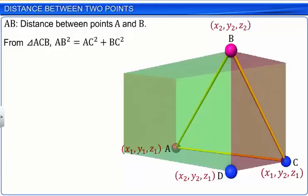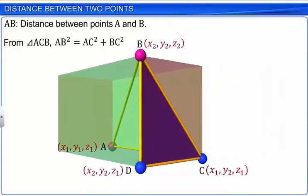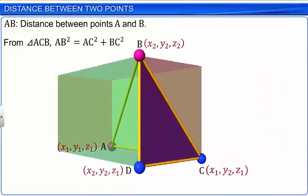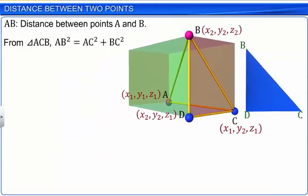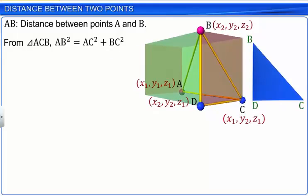Points D, B and C form a right-angled triangle with right angle at D. Therefore, we get BC² equals DC² plus DB².